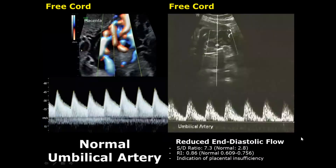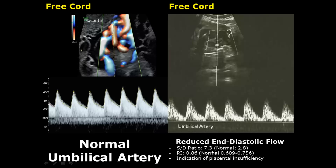Now we will compare the normal spectral Doppler to the abnormal spectral Doppler of the umbilical artery. In reduced end diastolic flow, the EDV is low — meaning the end diastolic velocity is reduced. The S/T ratio and resistive index are higher, indicating resistance to blood flow, and it may indicate placental insufficiency. In this example, the S/T ratio is very high at 7.3 and the resistive index is also high at 0.86.